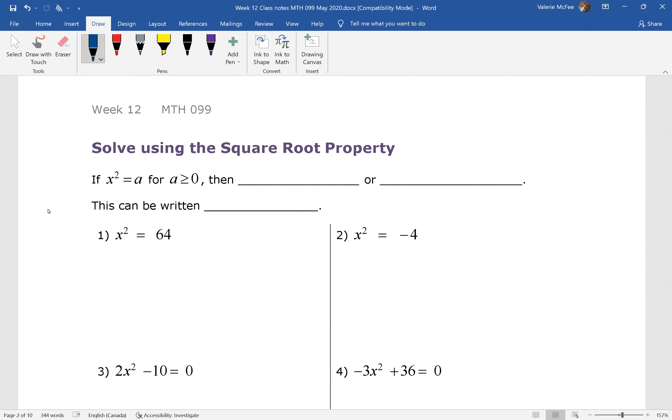Today we want to look at solving quadratic equations by using the square root property. I think you know that 3 squared and negative 3 squared both equal 9. We're going to use this idea to solve quadratic equations with the square root property.